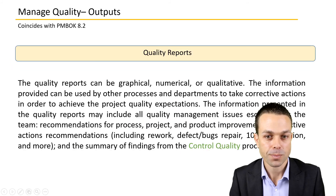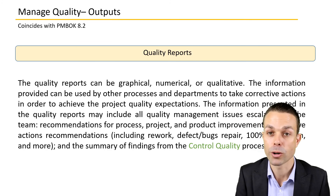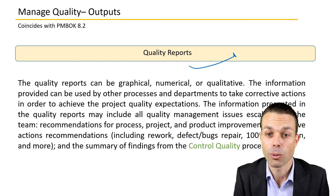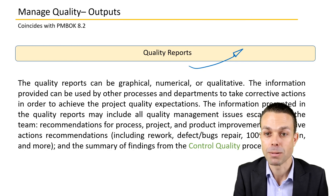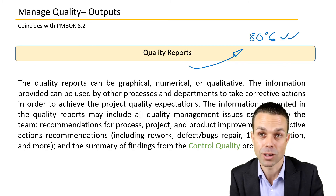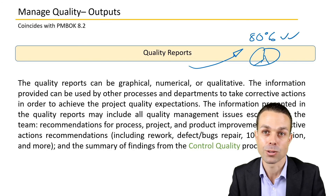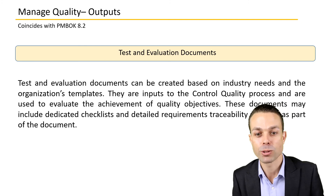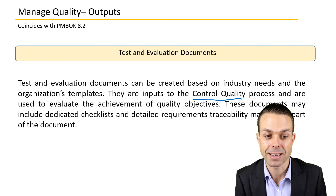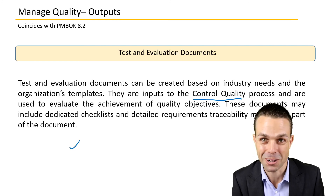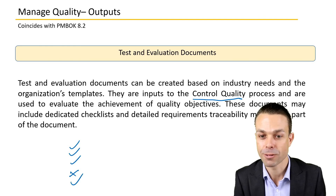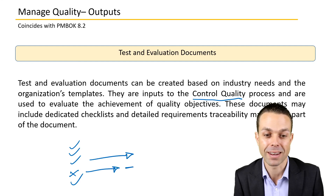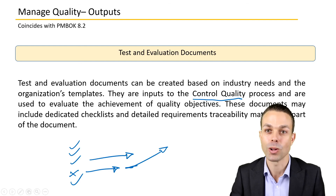Quality reports are outputs that can be graphical, numerical, or qualitative — we report on how quality is going, such as an 80% pass rate shown in a chart presented to the project sponsor or executives. Test and evaluation documents show how testing actually went and are inputs into the control quality process. Since some items pass and some fail, these feed into control quality so that failed items can be improved over time.